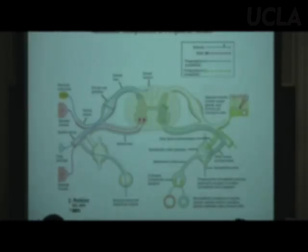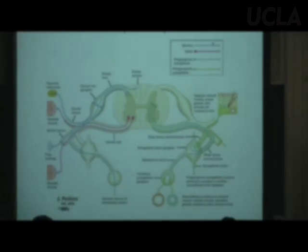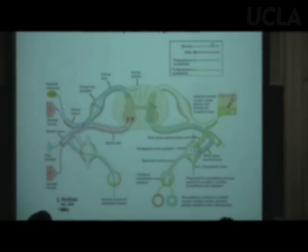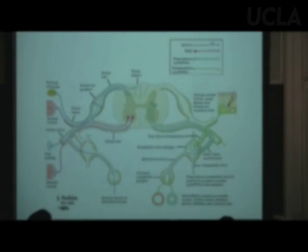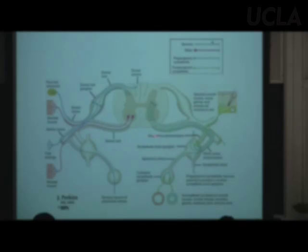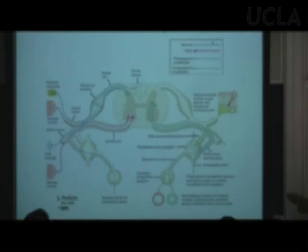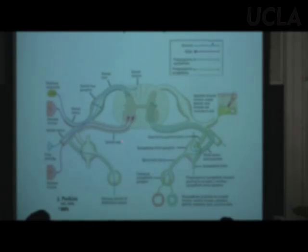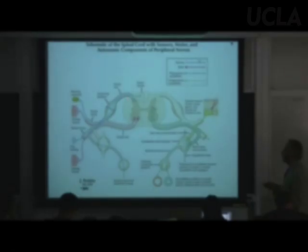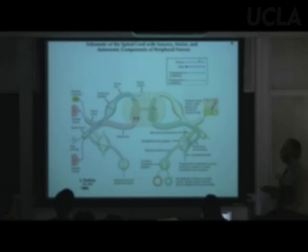Now let's talk about the somatosensory systems — we've got two. Before jumping in, let's talk about the organization of the spinal cord. Spinal cords are always presented with ventral down and dorsal up. Spinal nerves have two roots: a dorsal root and a ventral root.